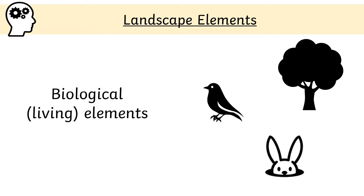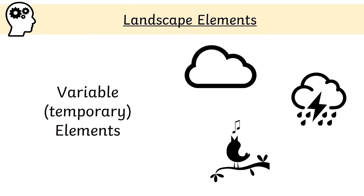The next group are biological elements. These include flora which is a term for plants and trees, fauna which is a term for wildlife, habitats and people themselves. The last group are variable elements — the word variable means temporary, it will change. These can include the weather, clouds, plants, any sounds you hear and any smells that you smell.